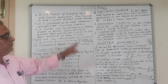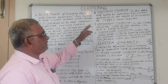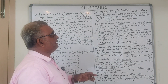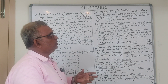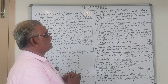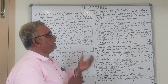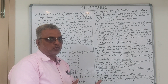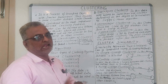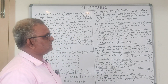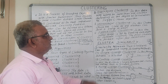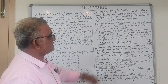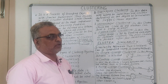In overlapping clustering, the data may belong to more than one cluster depending on the degree of correlation. So a data point can be part of one cluster and part of another cluster. A very good example for overlapping clustering is the fuzzy C-means algorithm.